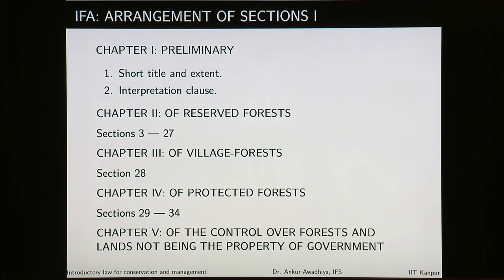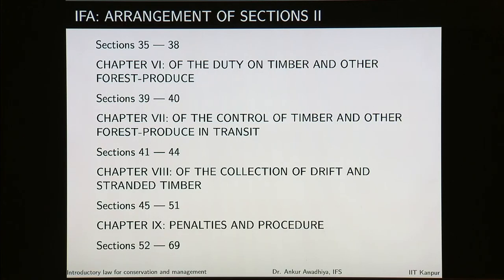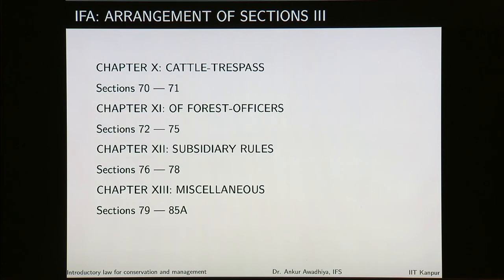In the arrangement of sections, the first two sections are short title and extent, and the interpretation clause which is related to definitions. Chapter 2 deals with reserved forests where the government has all the rights. Chapter 3 deals with village forests. Chapter 4 deals with protected forests. Then we have Chapter 5 on control over forests and lands not being the property of government, followed by duty on timber and other forest produce, control of timber and other forest produce in transit, collection of drift and stranded timber, penalties and procedure, cattle trespass, forest officers, subsidiary rules and miscellaneous provisions.